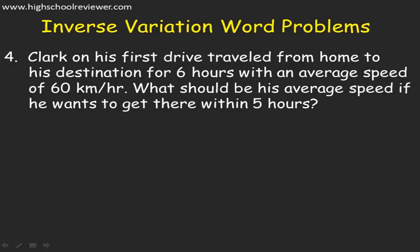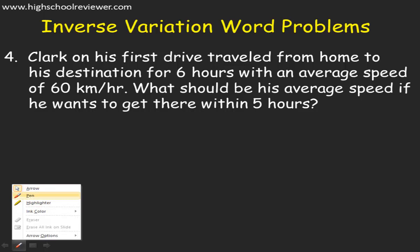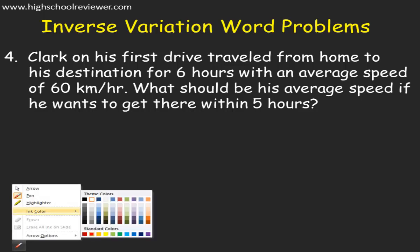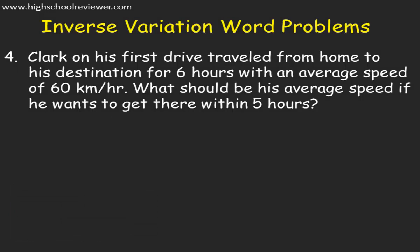Problem number 4: Clark, on his first drive, traveled from home to his destination for 6 hours with an average speed of 60 kilometers per hour. What should be his average speed if he wants to get there within 5 hours? We need to represent Y as the number of hours and X as the average speed. Y is equal to 6 when X is equal to 60 kilometers per hour.